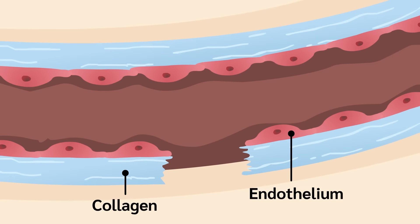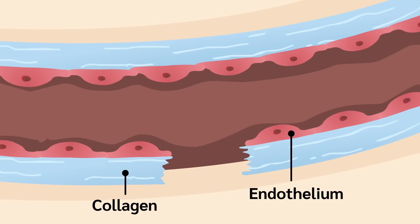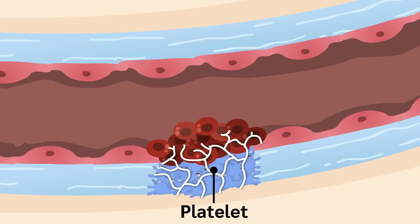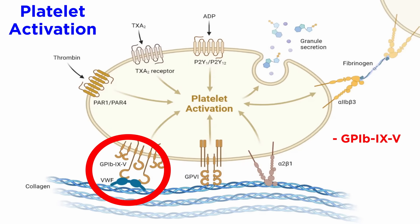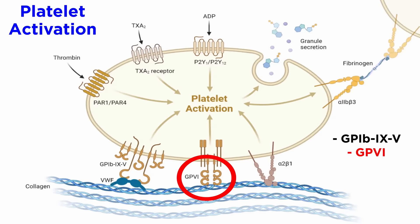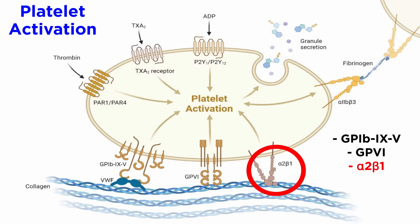With the loss of inhibition from the endothelial layer discussed, it's important to understand how collagen activates platelets, as these two factors work in tandem to lead to platelet activation and subsequent aggregation to form a thrombus. Initial collagen-platelet interactions are primarily mediated by four different non-GPCRs on the plasma membrane of the platelet: the glycoprotein-1b95 receptor, abbreviated GP1b95; glycoprotein-6 receptor, or GP6; integrin-alpha-2-beta-1; and integrin-alpha-2b-beta-3.